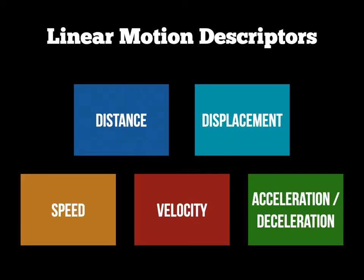As we discussed in the last screencast, Linear Motion 1, we were talking about the linear motion descriptors. These play an important part in the next step we're going to be discussing on this screencast. The examiner may ask you to do one of two things: draw a graph based on a table or some data they've given you, or describe a graph. The way we're going to use the linear motion descriptors is in the description of the graph.